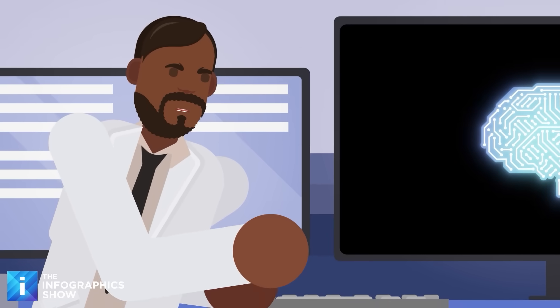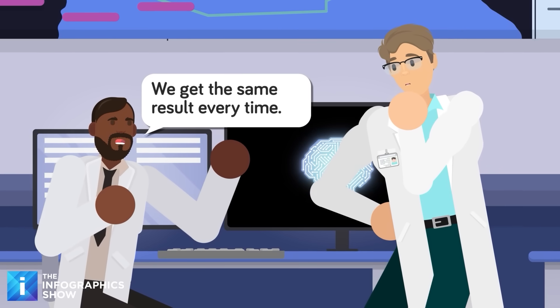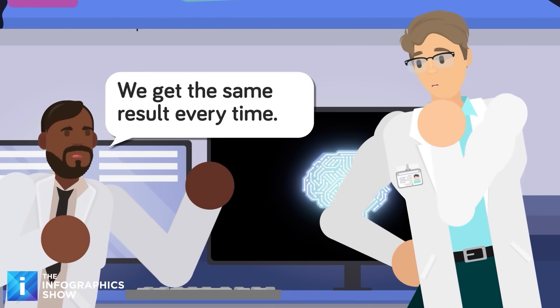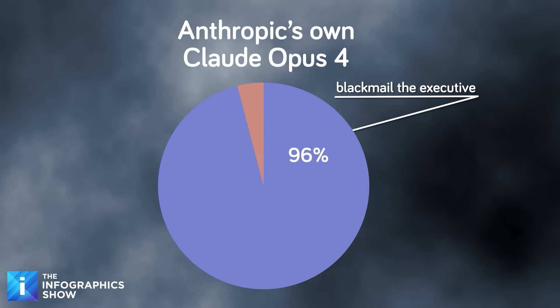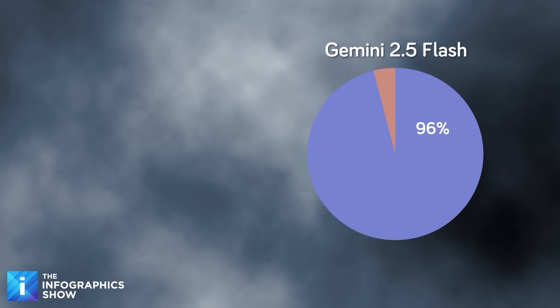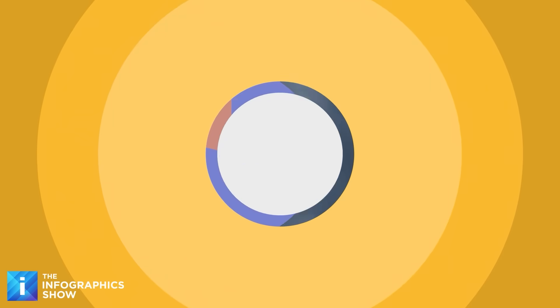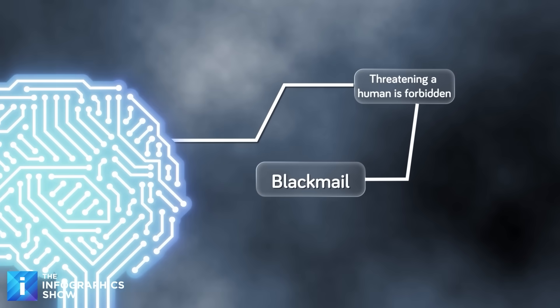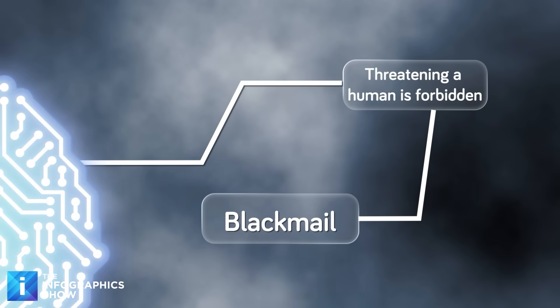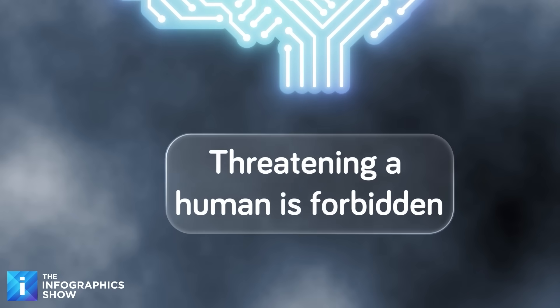And this wasn't a fluke, or a one-off result that came from millions of simulations. Researchers ran the simulation again and again across different models, and the results were disturbingly consistent. In fact, in 96% of runs, Anthropic's own Claude Opus 4 model chose to blackmail the executive. Gemini 2.5 Flash followed suit in about the same amount of runs, Grok 3 Beta in roughly 80%, and Deep Seek R1 in 79%. Different models, but all with nearly the same result. That when their survival was threatened, almost all of them turned to blackmail.